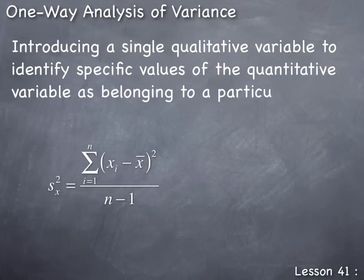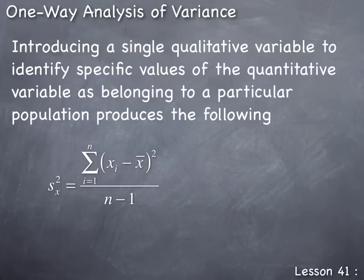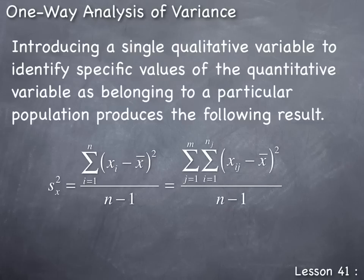Introducing a single qualitative variable to identify specific values of the quantitative variable as belonging to a particular population produces the following result. The variance is the same — it's just written in a form that allows us to separate the data values by the population from which they were sampled.